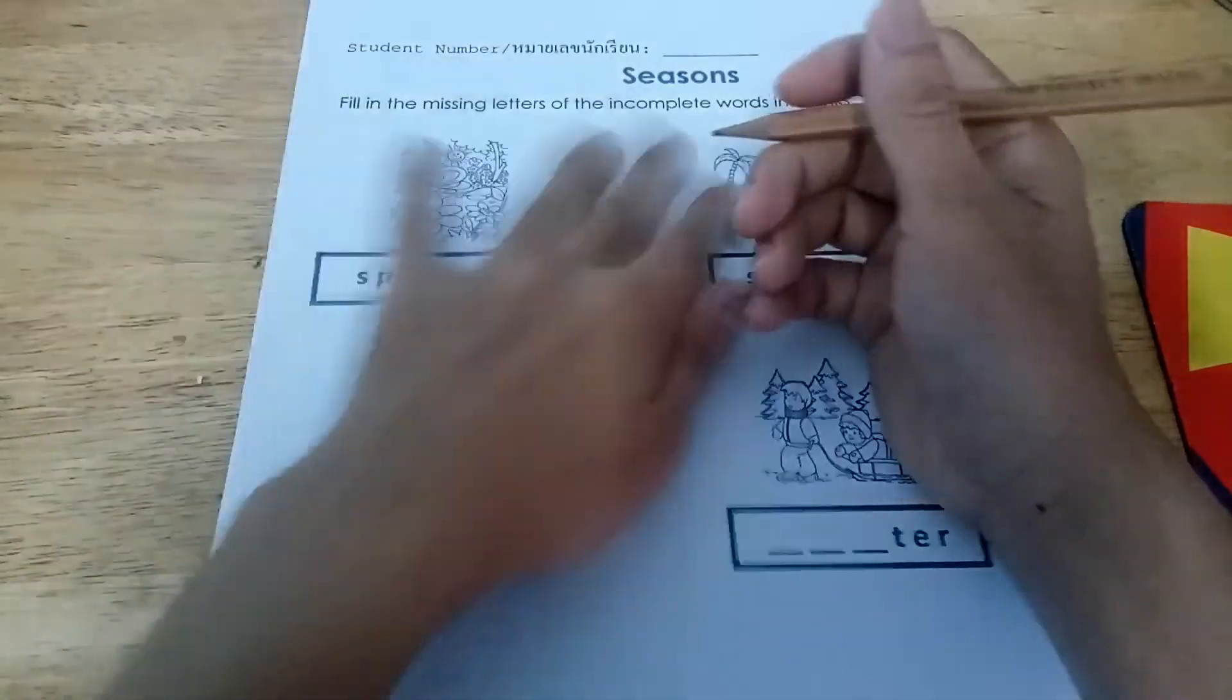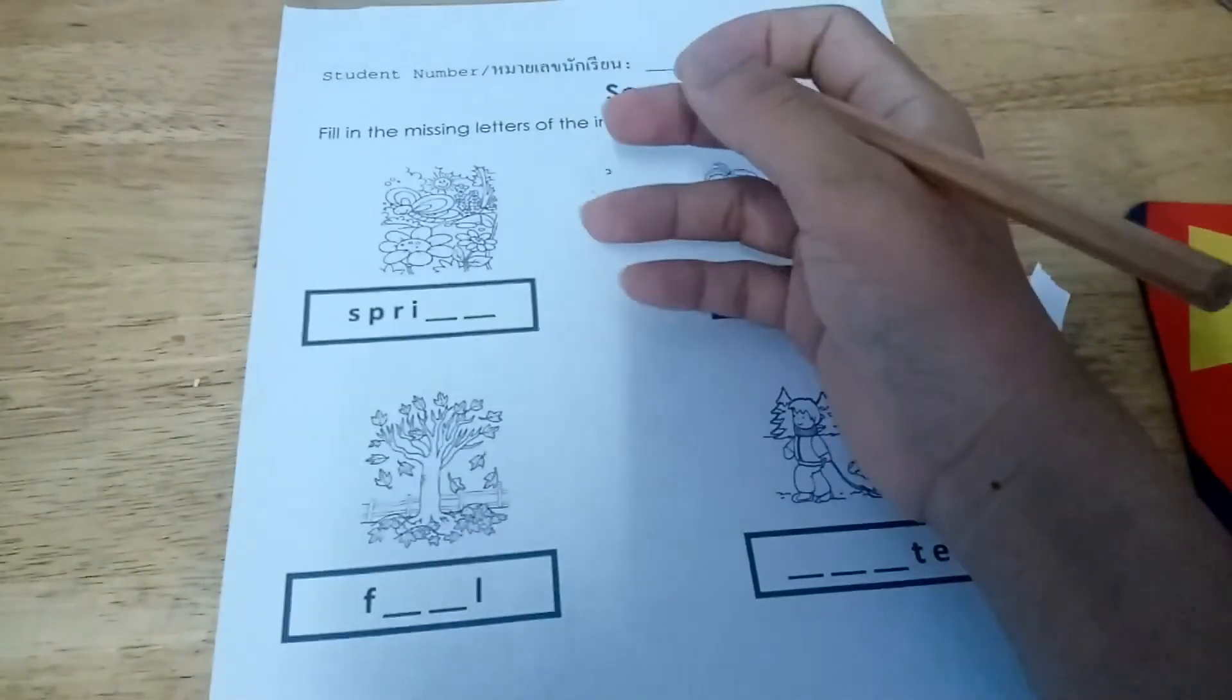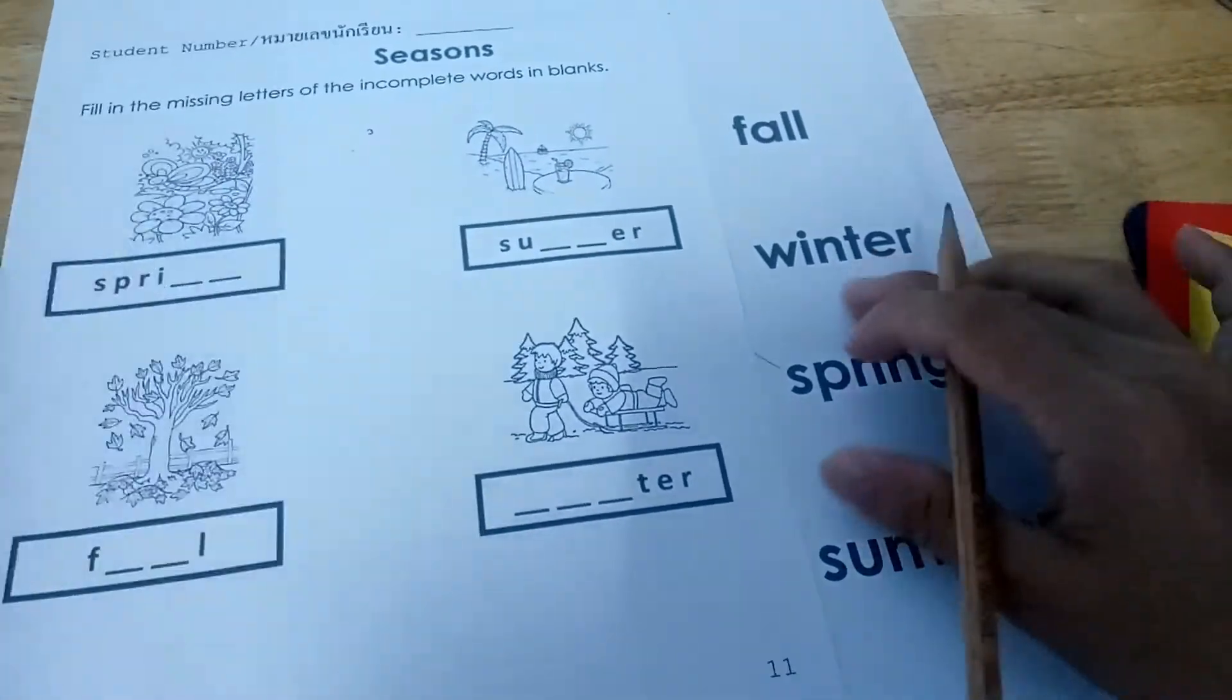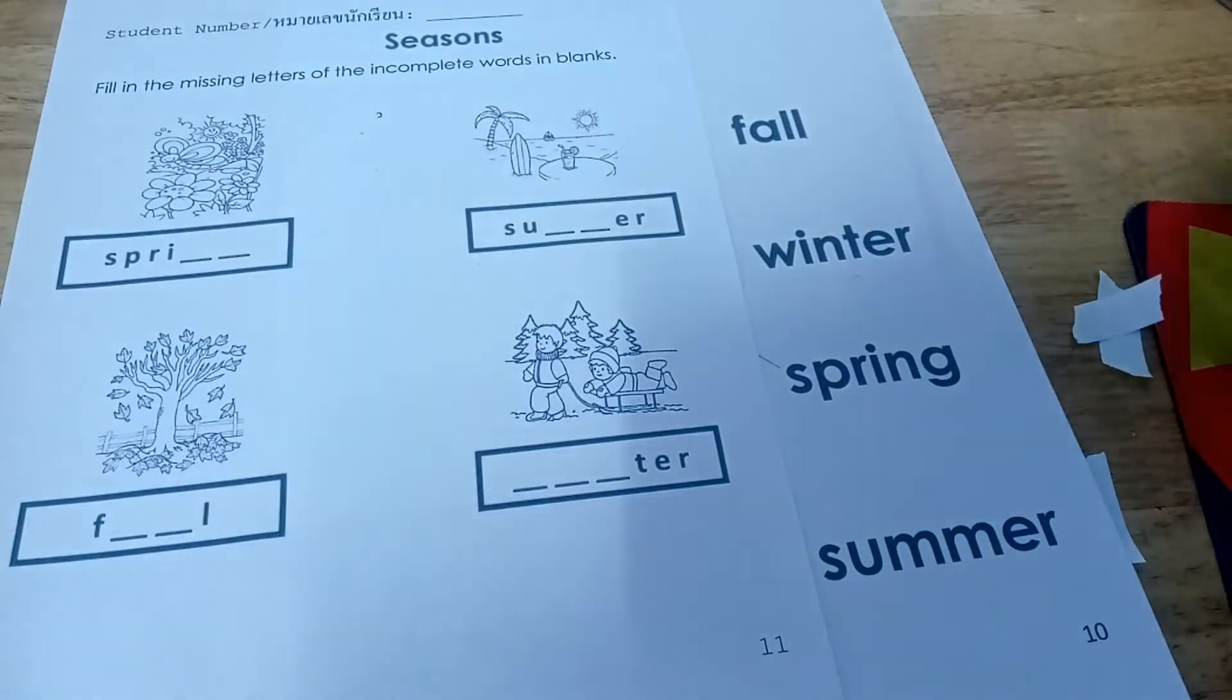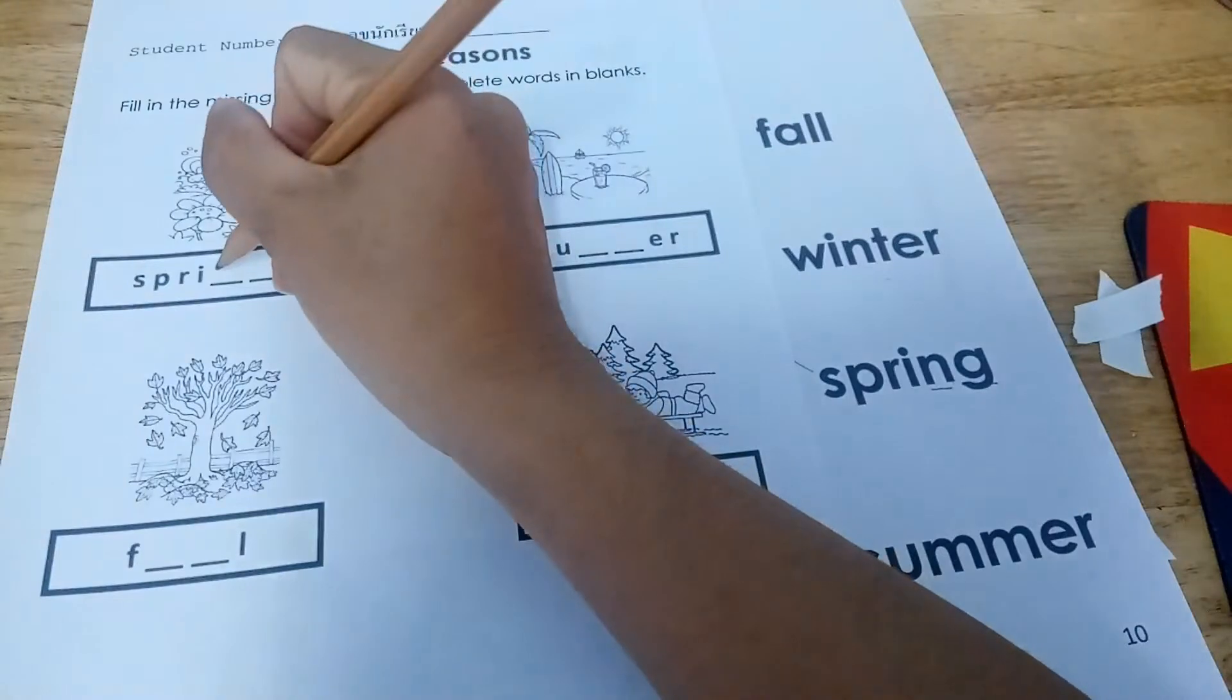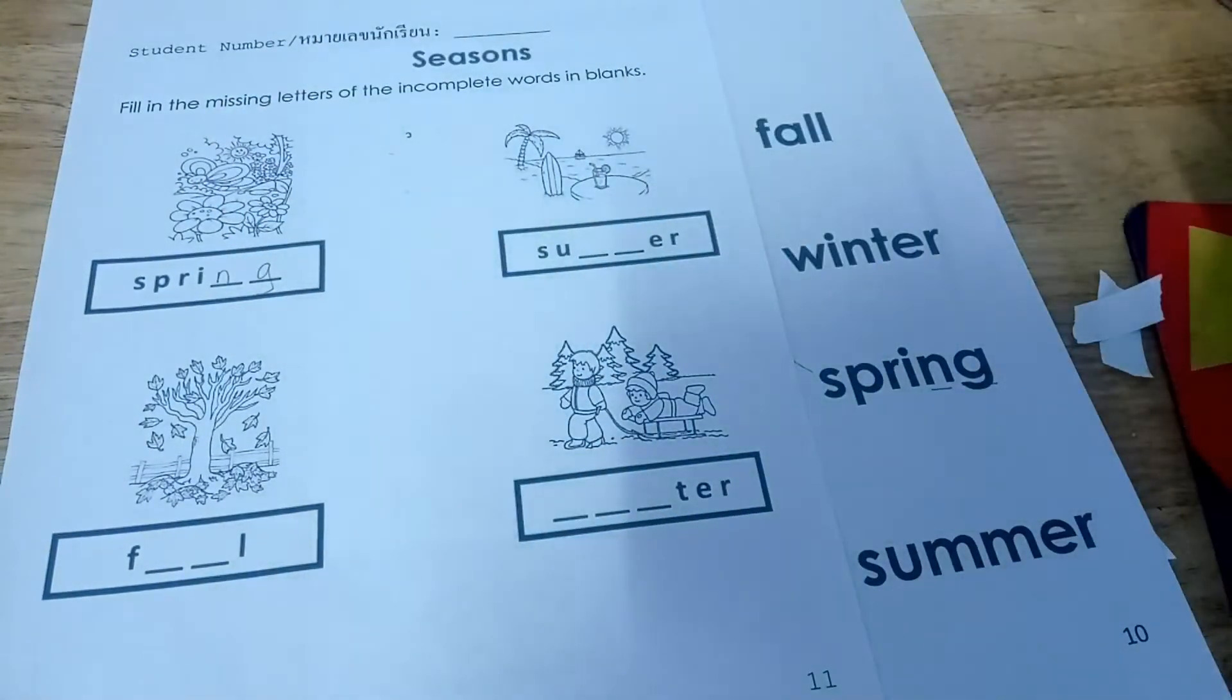Okay, the missing letters are? Okay, let's do this. Let's get this one as our reference. Okay, spring. It's S-P-R-I. So, what are the missing letters? It's the N and G. Okay, let's write here. N and G. That's it.